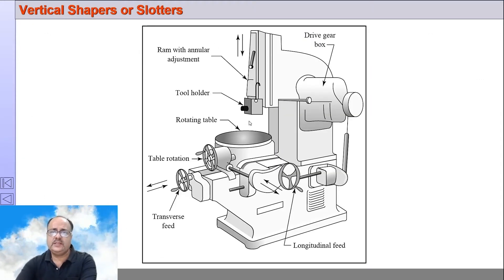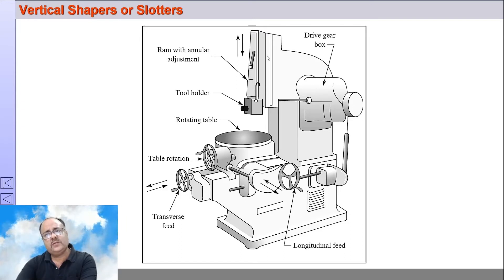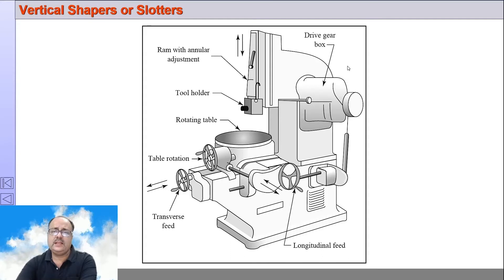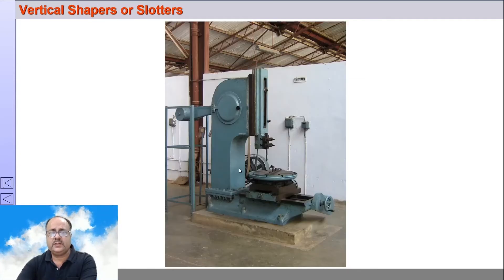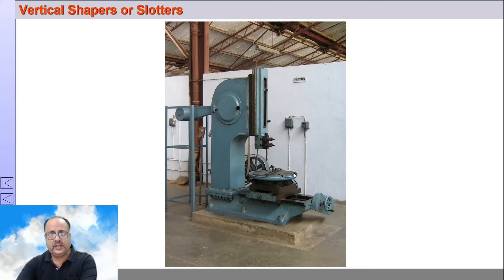This is a slotter machine. You can see the circular table and a circular feed can be given. This is the ram which reciprocates — during the downward stroke it cuts, and during the upward stroke it does not cut. Since the weight is coming down, a counterbalance is added to the slotter machine, which is not present in a shaper machine. This counterweight balances the ram, which comes down along with the tool, and there is a circular table here.